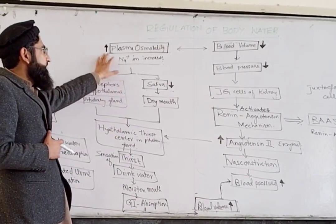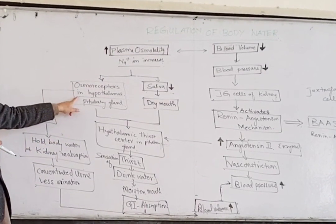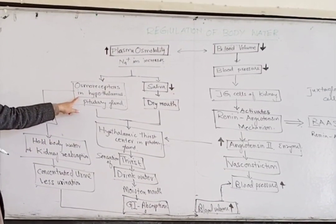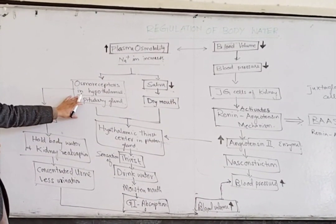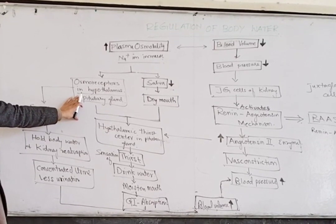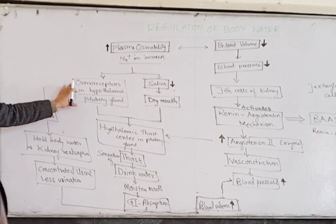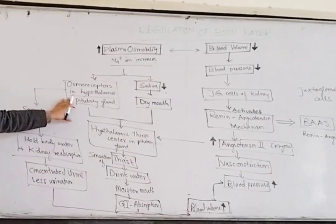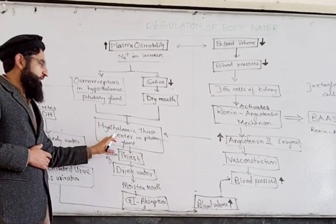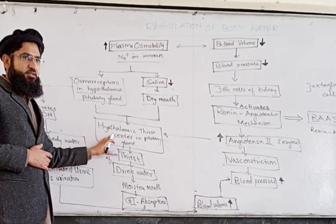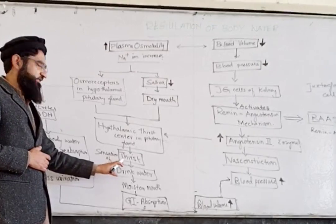Similarly, when plasma osmolality increases, it acts on osmo receptors in the hypothalamus. These osmo receptors in the hypothalamus act on the hypothalamic thirst center, which causes the sensation of thirst.